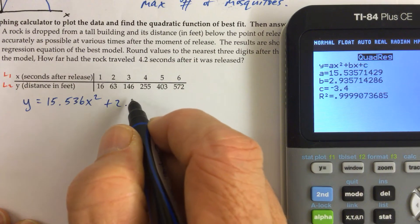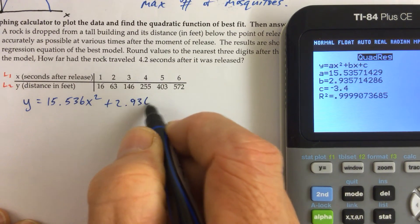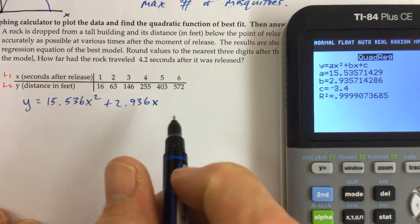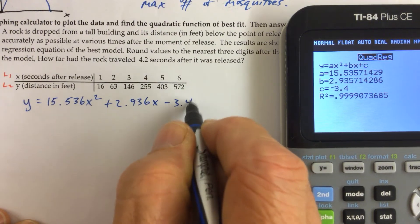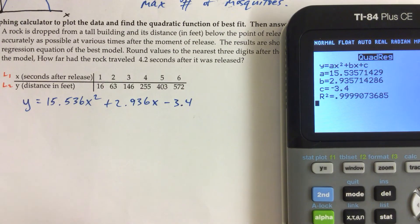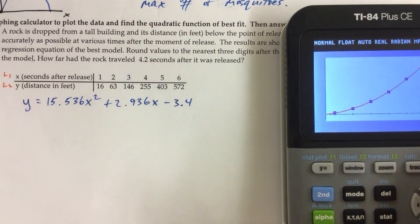Plus 2.936, that's the B value that goes in front of the X. And then minus 3.4, so there we have our C value.